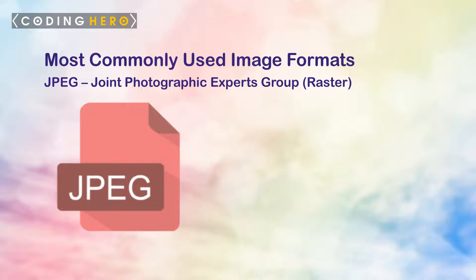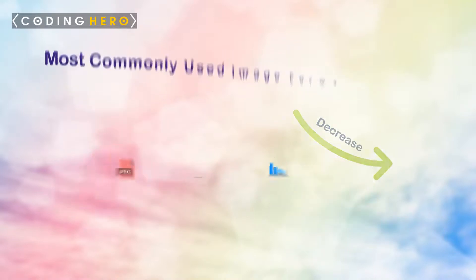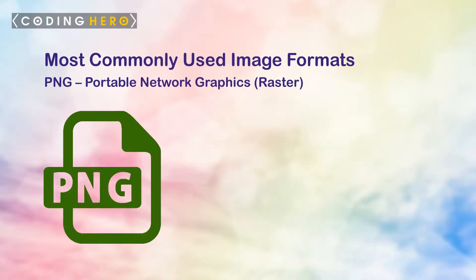Most commonly used image formats. Number one: JPEG, or Joint Photographic Experts Group — a raster format. JPEGs might be the most common file type you come across. JPEGs are known for their lossy compression, meaning that the quality of the image decreases as the file size decreases.